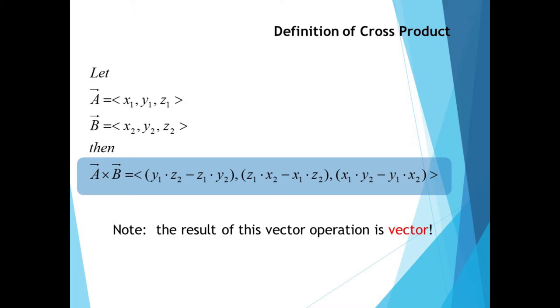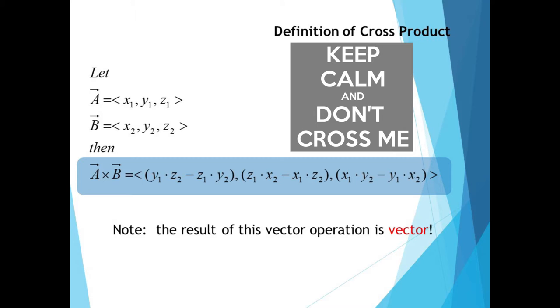Let's start with the definition. If we start with two vectors, a equals x1, y1, z1, and b equals x2, y2, z2, then the cross product is a new vector given by the definition shown here.